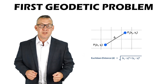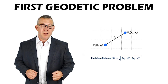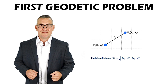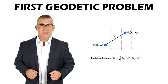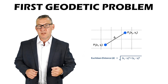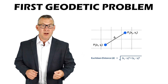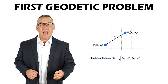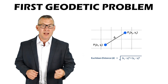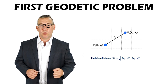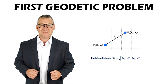The first, or direct, geodetic problem: given a point's coordinates, the direction or azimuth, and the distance from that point to a second point, determine the coordinates of the second point.